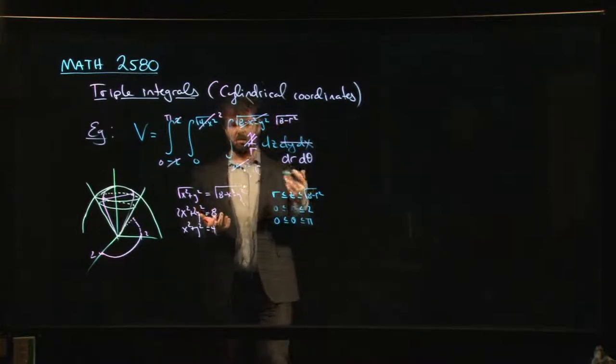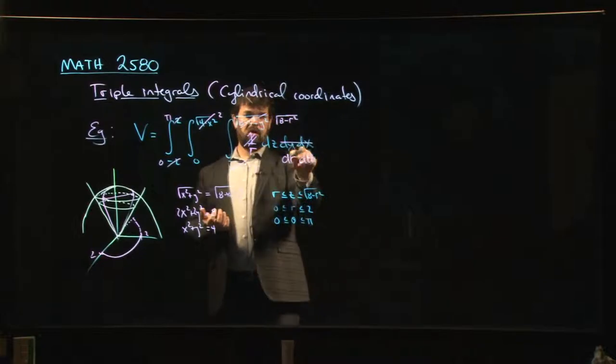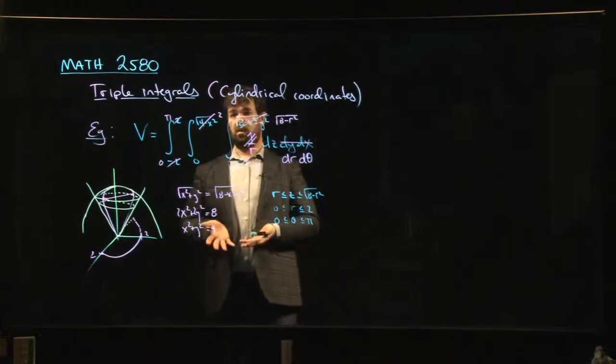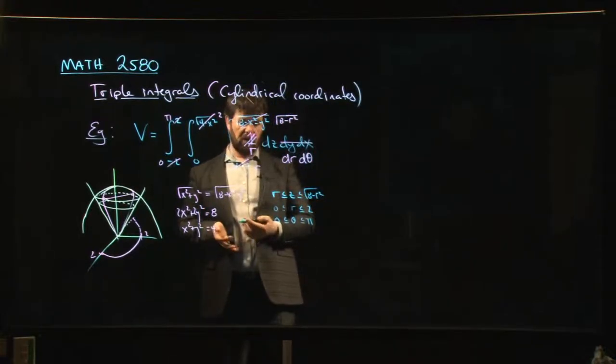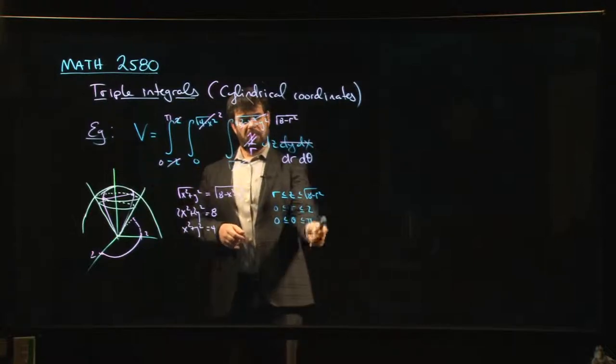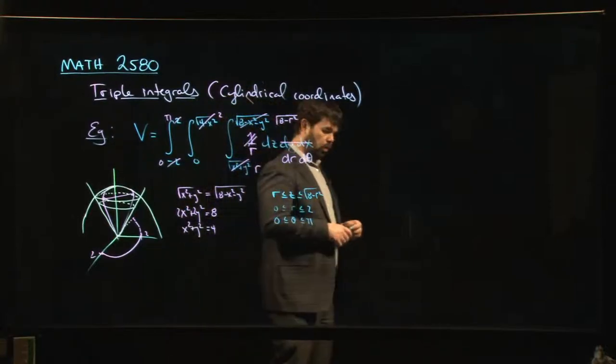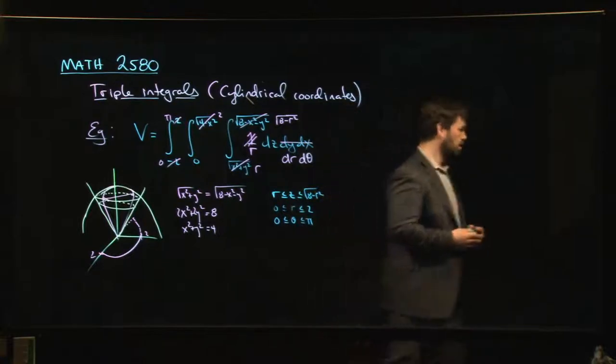And so we did the z integral as usual and then we just took the integral over x and y and we converted it to polar coordinates. It turns out that this description of the region is exactly a cylindrical coordinate description of the region.